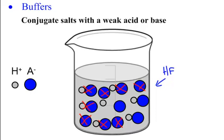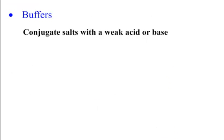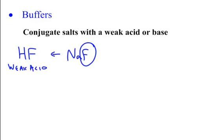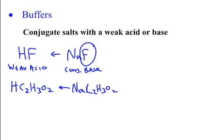Let me give you an example of what a buffer would be. Let's say I have HF, my weak acid. If I was going to make that a buffer, I need to put in something like sodium fluoride or potassium fluoride, something with that fluoride ion, that conjugate base. Let's say I have acetic acid, HC2H3O2, my weak acid. What am I going to put in there to make that a buffer? I'm going to put something like sodium acetate or potassium acetate or lithium acetate, something with that acetate, that C2H3O2- ion, that conjugate base.